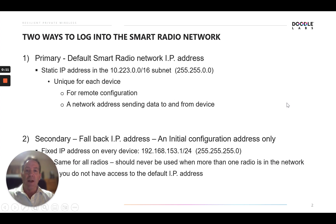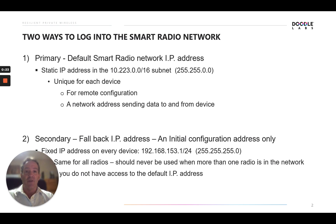There are two ways to log into the smart radio network in terms of IP addresses. The first is the primary or default smart radio network IP address, which is a static IP address in the range 10.223.0.0/16 subnet. It's unique for each device, and it's for remote configuration, or it can be used as a network address for sending data to and from the device.